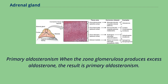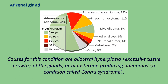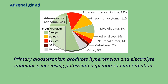When the zona glomerulosa produces excess aldosterone, the result is primary aldosteronism. Causes for this condition are bilateral hyperplasia of the glands or aldosterone-producing adenomas. Primary aldosteronism produces hypertension and electrolyte imbalance, including potassium depletion and sodium retention.